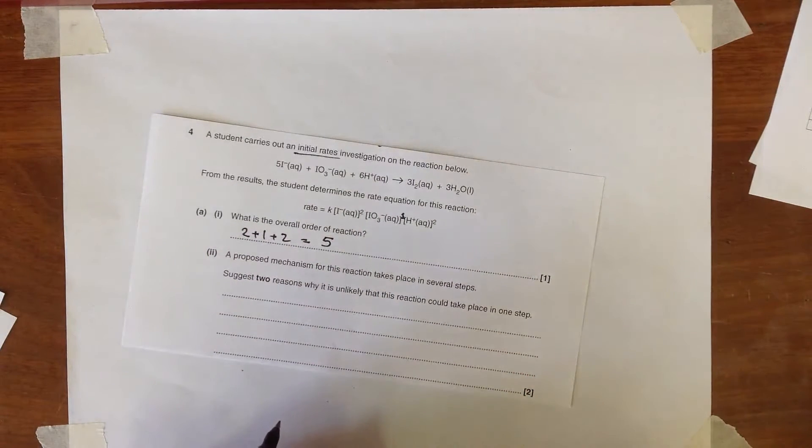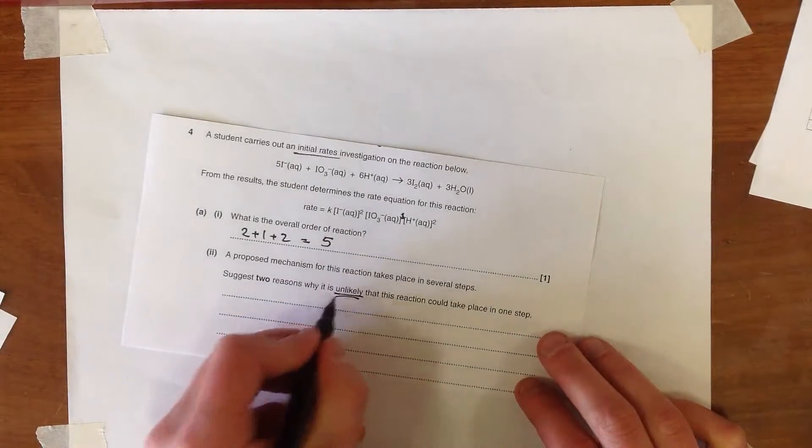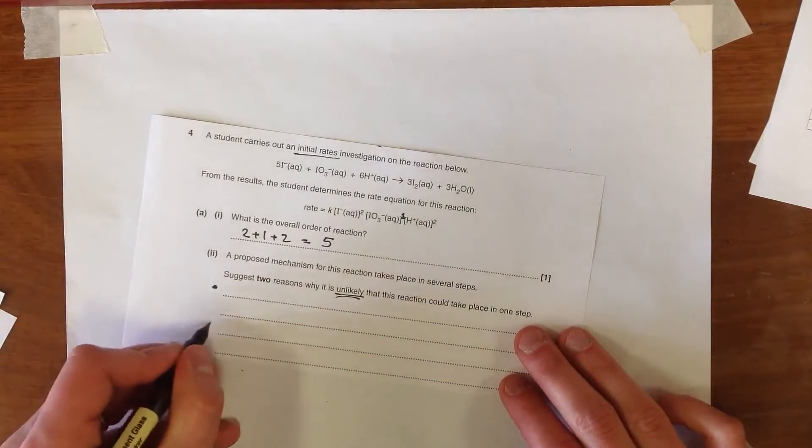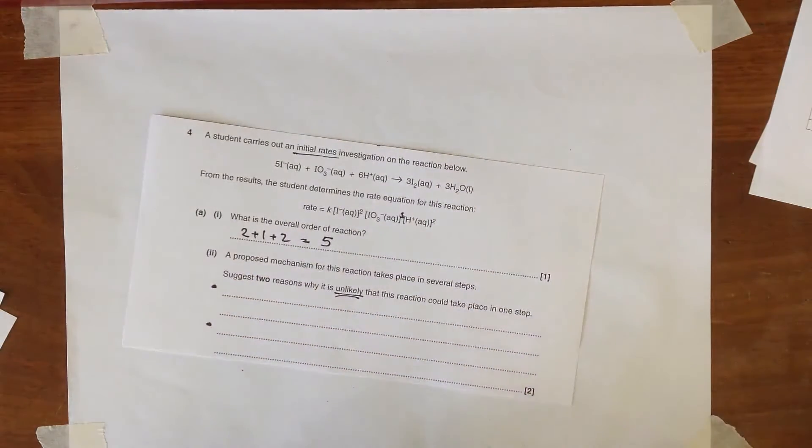Now the proposed mechanism for the reaction takes place in several steps and we're to suggest two reasons why it's unlikely that this reaction can take place in one step. So we're going to have two reasons here and they need to be two distinct reasons.